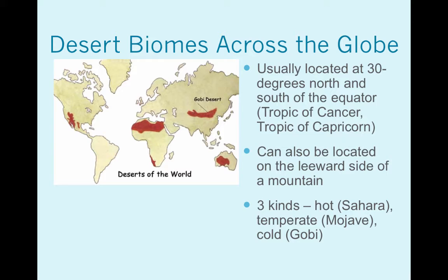Please realize that deserts are more about the lack of precipitation than they are about the temperature. You can have hot deserts, temperate deserts, and cold deserts — deserts where there's snow on the ground all the time.